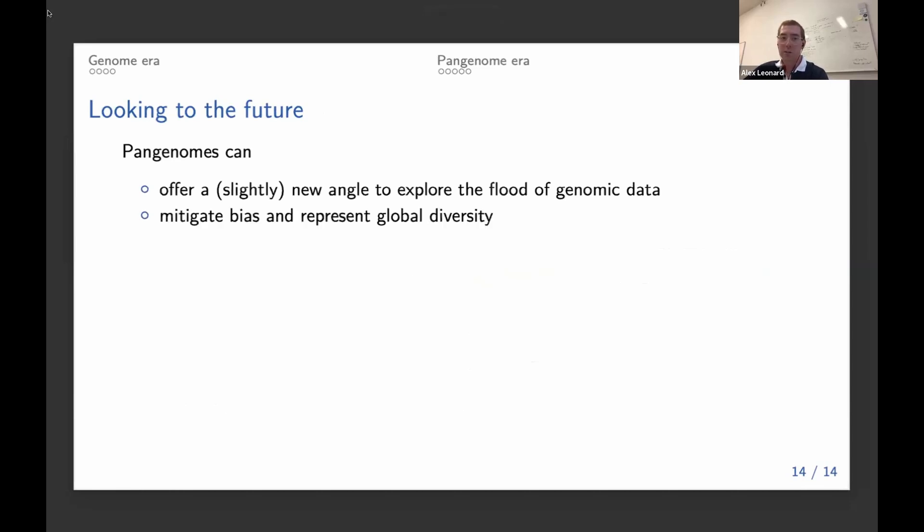Pangenomes are very useful for how we can mitigate reference bias and also better represent global diversity. The cattle reference genome is based on Hereford, which is a Western European cow. But of course, there's many other different cows across the world that if we can somehow make a better pangenome for the entire community, this is certainly going to be a good thing.